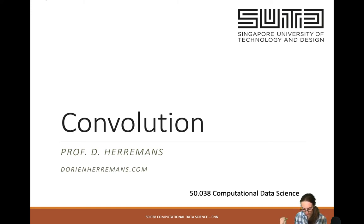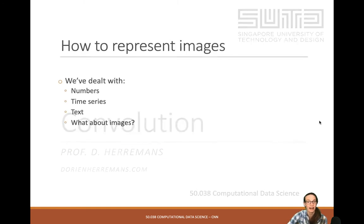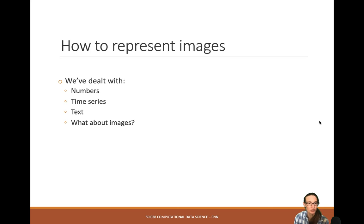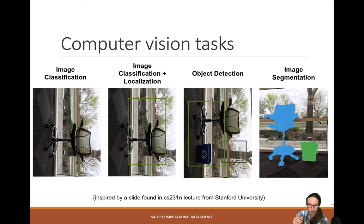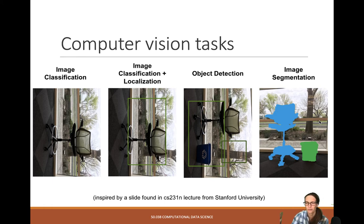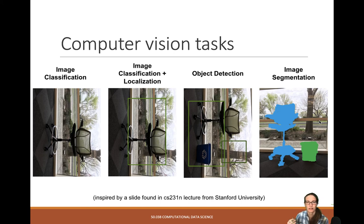Convolutional neural networks' first application was image representation. Let's have a look at how we represent images. We've dealt with simple numbers, time series, and text, but how do we represent images? When we have convolutional neural networks, this enables us to do some computer vision tasks. If I say computer vision, it really means representing images and videos on a computer. These days the field implies you're using neural networks, but that's not always the case. Some tasks related to data science include image classification.